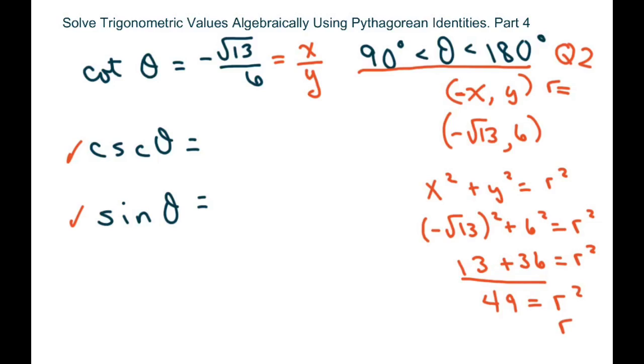So r is going to be square root of 49 if you take the square root of both sides. Since r is always positive, our r is going to be 7.